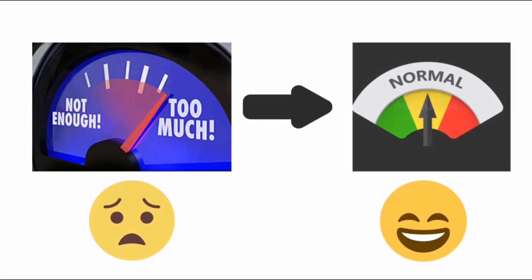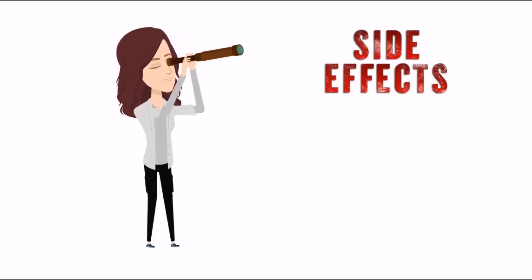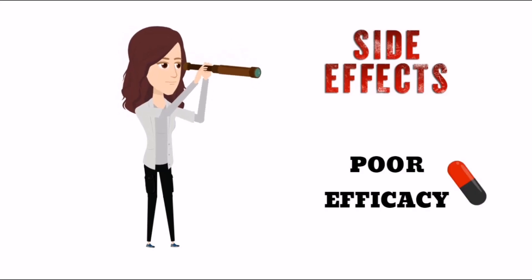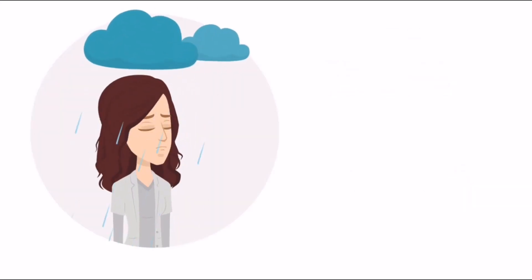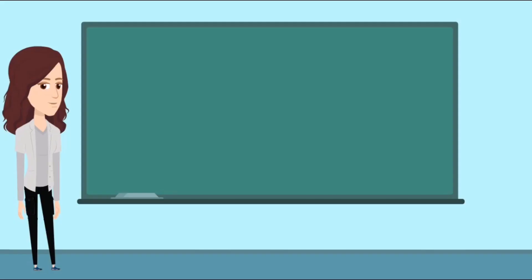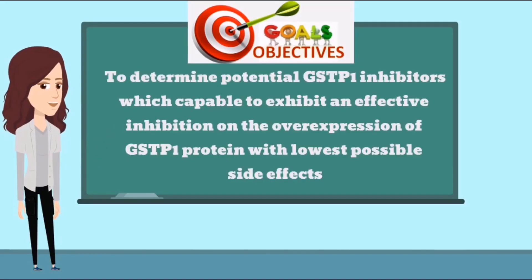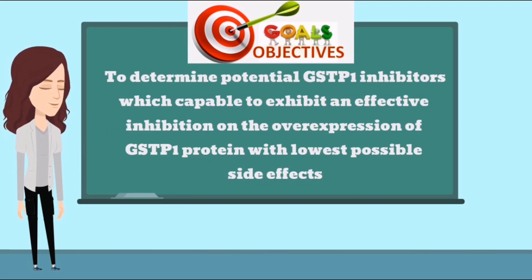However, this first classic GSTP1 inhibitor was found to have significant side effects with poor efficacy. Sadly, problems still remain unsolved. Hence, a bioinformatics-based research was conducted to solve this problem. The objective of this study is to determine potential GSTP1 inhibitors which are capable of exhibiting effective inhibition on the overexpression of GSTP1 protein with the lowest possible side effects.